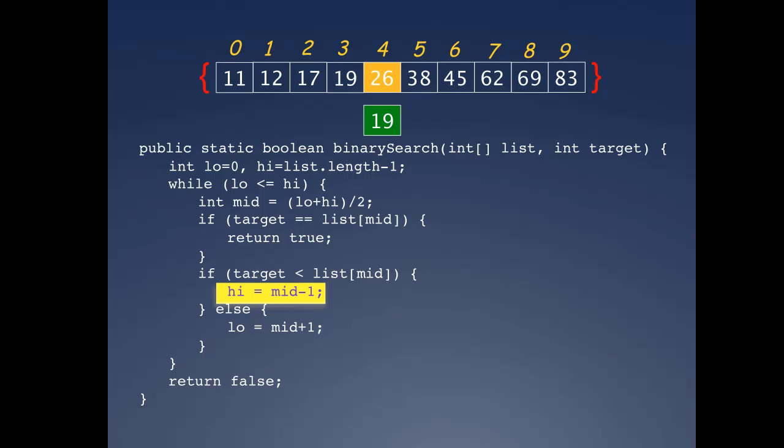19 is not equal to 26, which then results in another comparison that checks if 19 is less than 26. It is, and this results in high being set to mid minus 1, highlighted in the code.